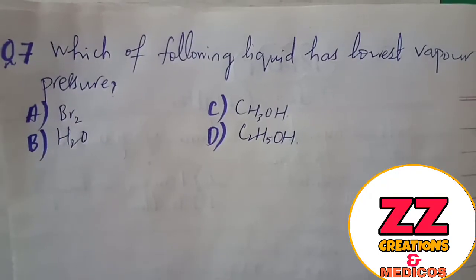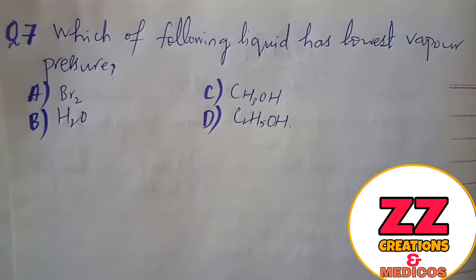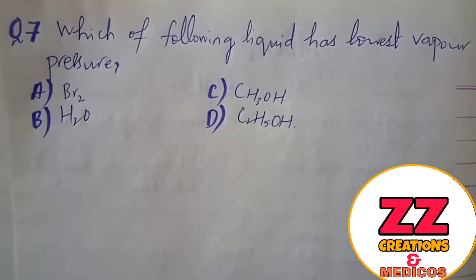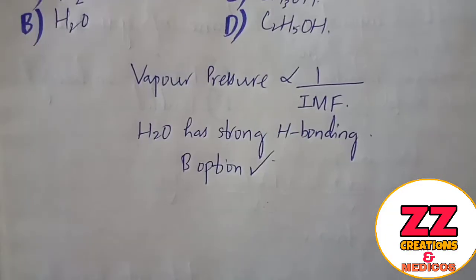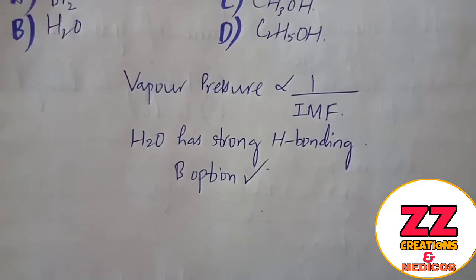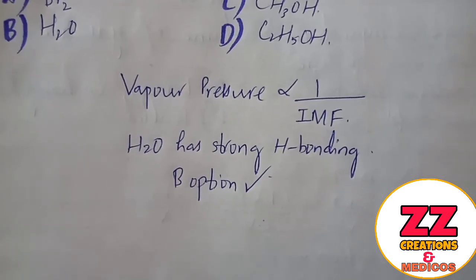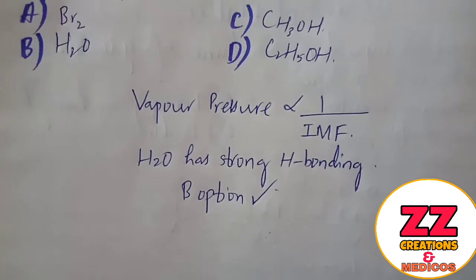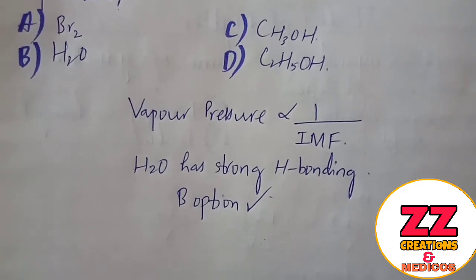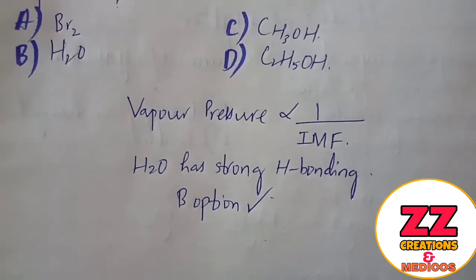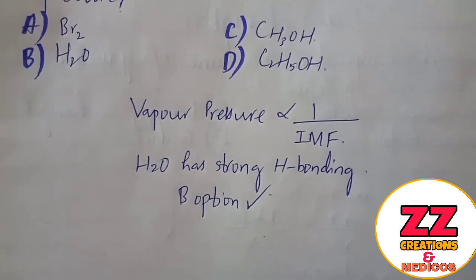Next question: Which of the following liquids has the lowest vapor pressure? You have to remember that vapor pressure is inversely proportional to intermolecular forces. Water has the strongest hydrogen bonding, meaning its intermolecular forces are strongest and its vapor pressure will be the lowest. So water is the correct answer.